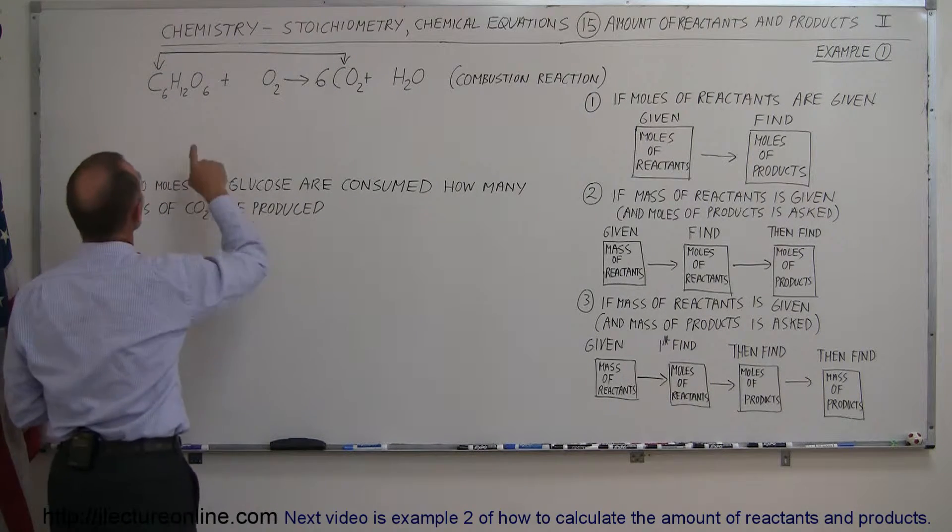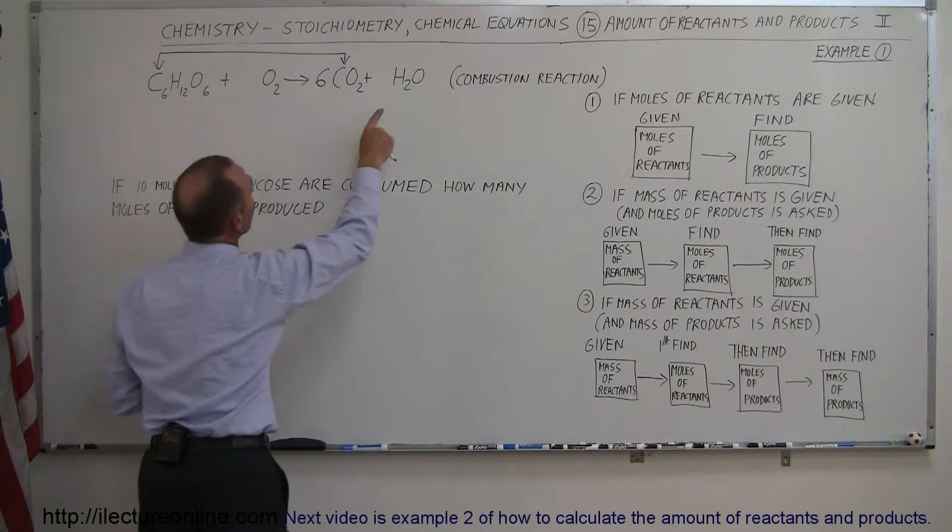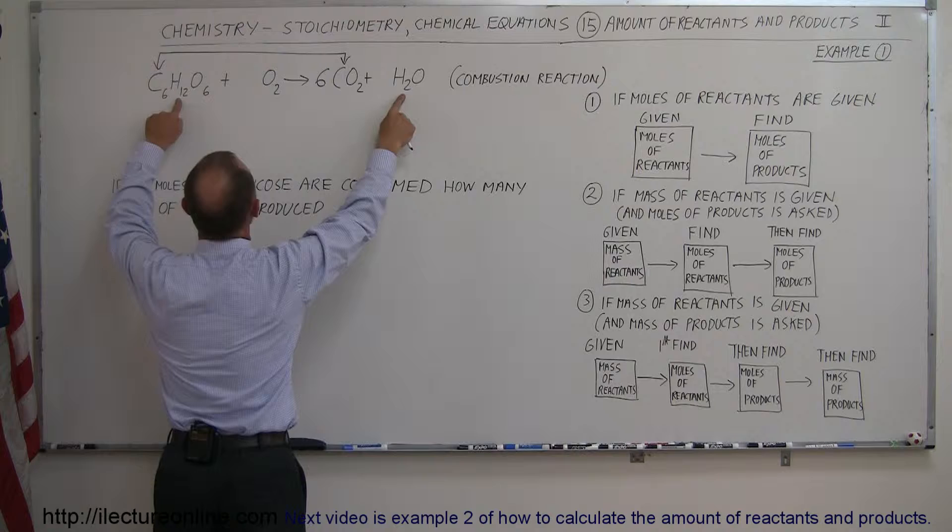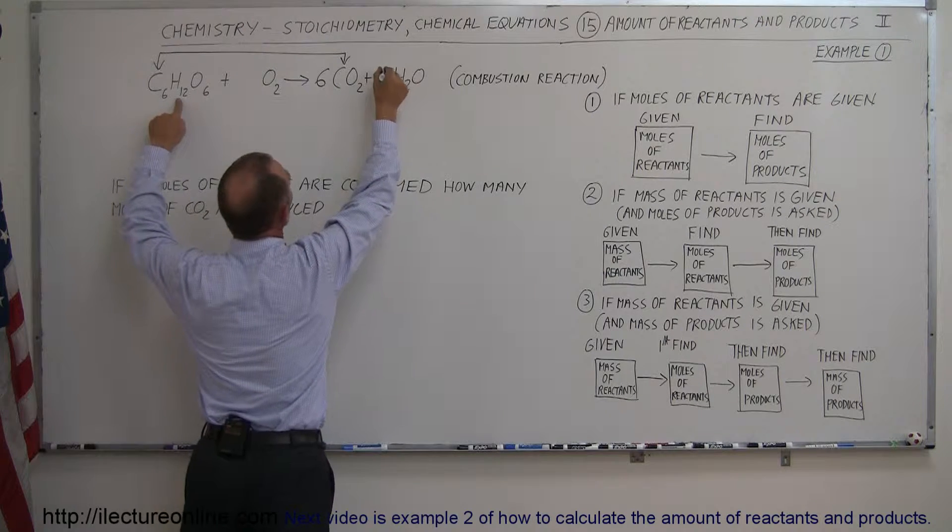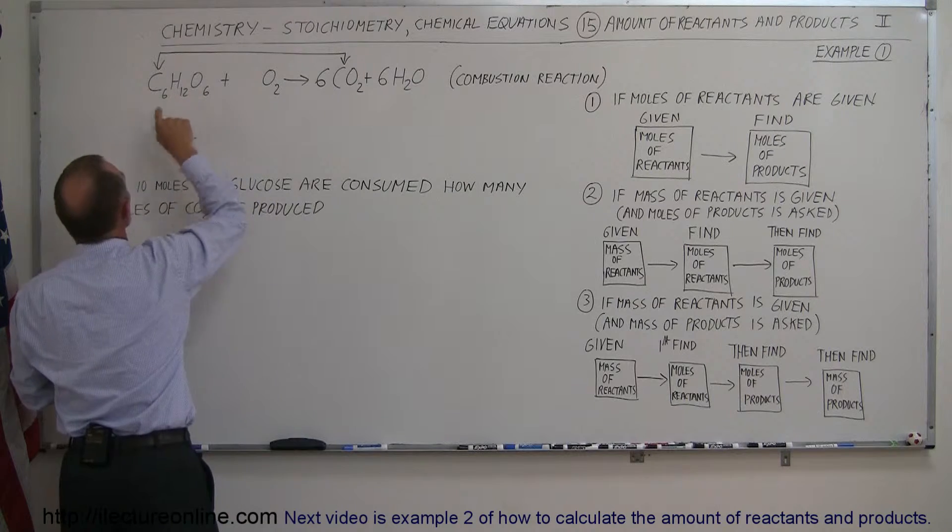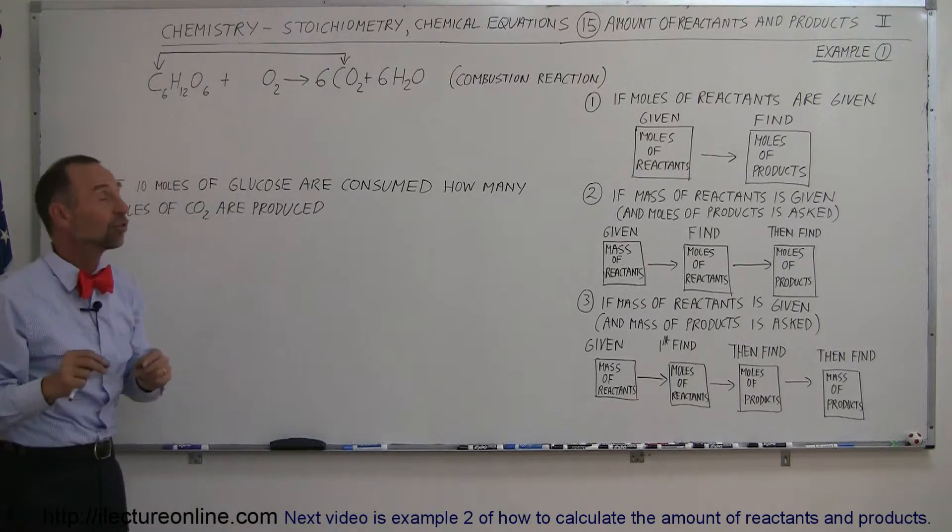Next we'll take hydrogen. Here we have 12 hydrogens and here we only have two hydrogens. So that means to balance the hydrogen out, I'll need six more of these. I'll put a six in front here and six times two is 12. That means 12 hydrogens over here, so now hydrogen is balanced.